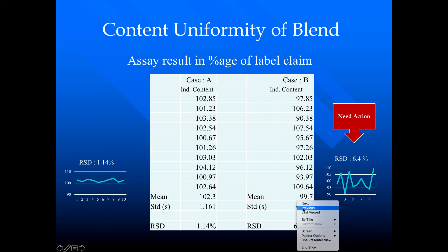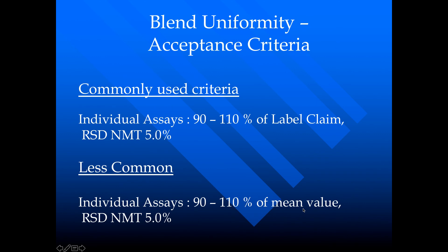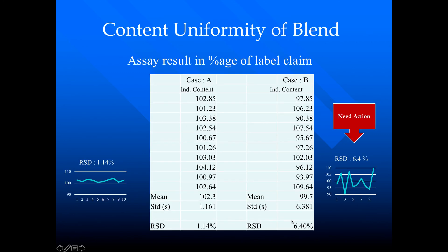Let's go back to our acceptance criteria. Individual assay should be between 90 to 110 percent of the label claim and RSD must not be more than 5%. In Case B, the RSD is more than 5% — although the individual assay values are between 90 to 110 percent, there is a lot of variation. You can see from the graph that there is a lot of variation. This high variation causes a high standard deviation, which is why the RSD is 6.4% and the result is not acceptable.